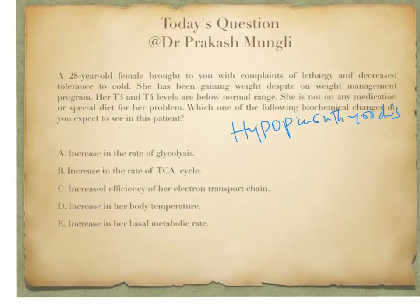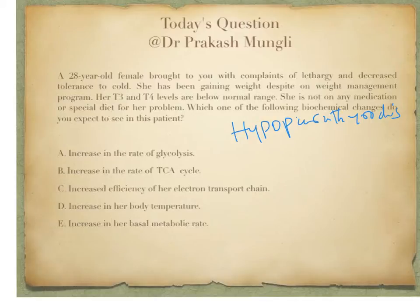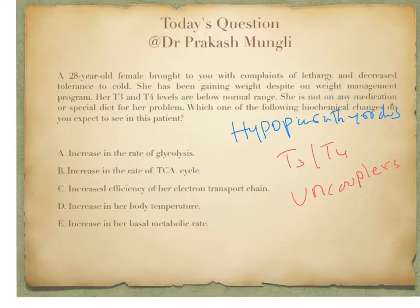In order to know the correct answer, you first need to know what is the effect of T3 and T4 on metabolism. Although T3 and T4 have numerous metabolic effects on a variety of subcellular organelles, let's restrict ourselves to the effect of T3 and T4 on the electron transport chain. T3 and T4 act as uncouplers of the electron transport chain — they are going to uncouple electron transport from the phosphorylation process.